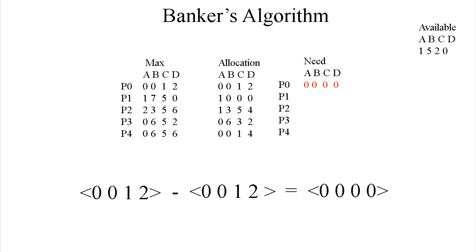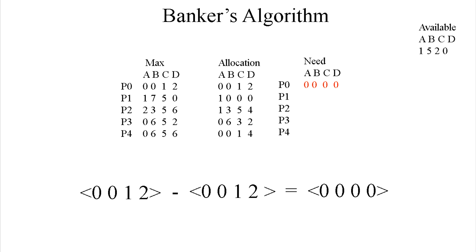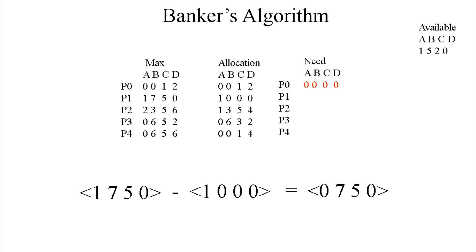Then we're going to grab the next one, which is 1, 7, 5, 0, and we're going to subtract 1, 0, 0, 0 from it. The only real arithmetic that occurs here is subtracting 1 from 1, so we end up with 0, 7, 5, 0, and we go ahead and fill that in.